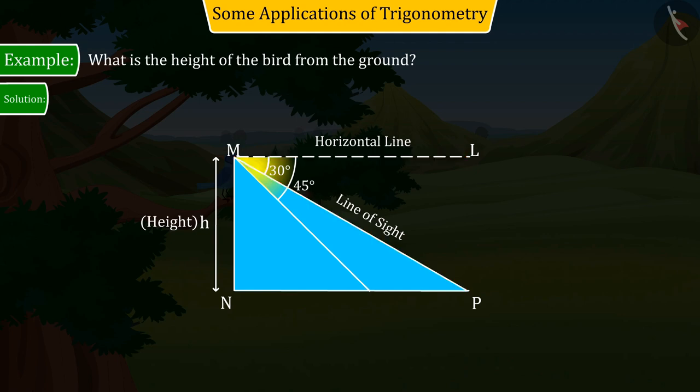Looking at the figure, we find that PM is a transversal line of parallel lines LM and PN. Therefore, in this case, we can say that angle LMP and angle MPN are alternate angles. So, they will be equal.